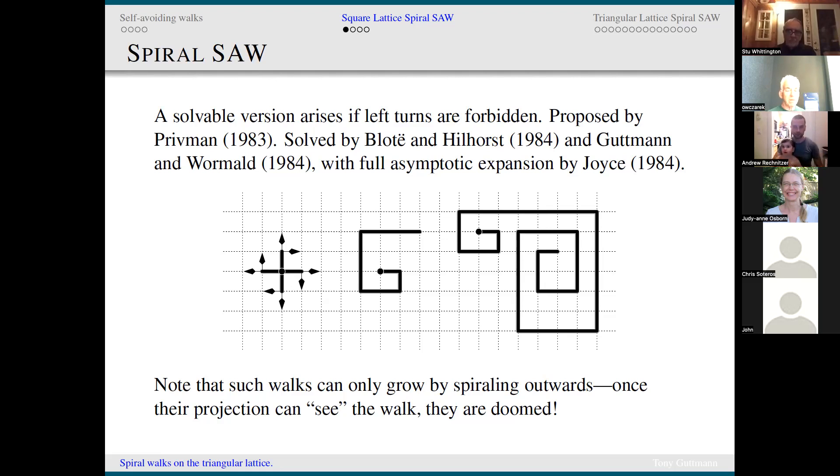When I looked at the result, he had a critical exponent of something like 15. And I thought that's ridiculous. There's no physical model that behaves like that. So I got interested in the problem and realized that it could be exactly solved. And it was simultaneously solved by Blote and Hilhorst and by Nick Wormald and me in 1984.